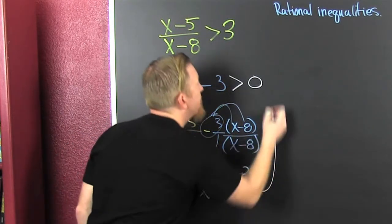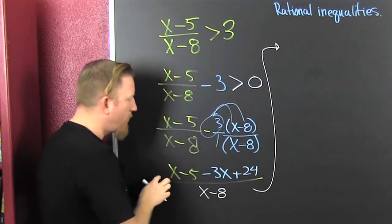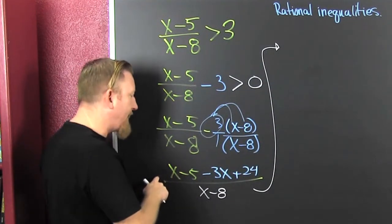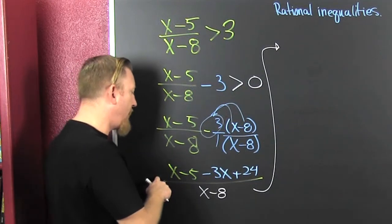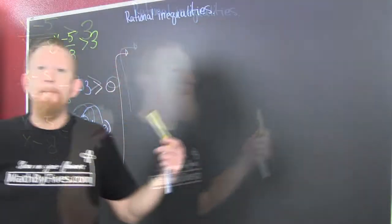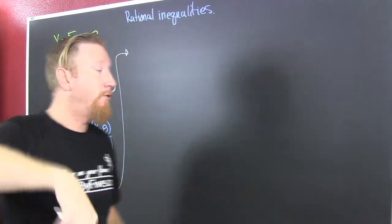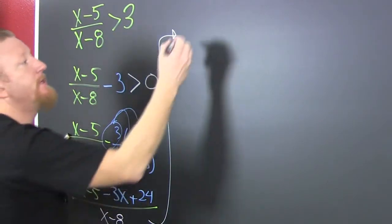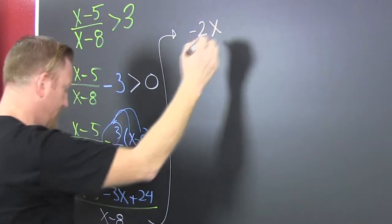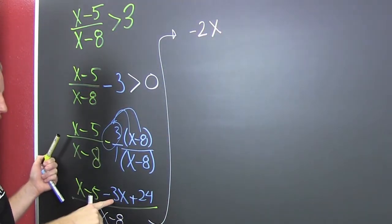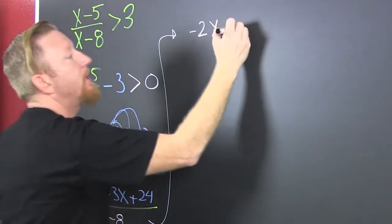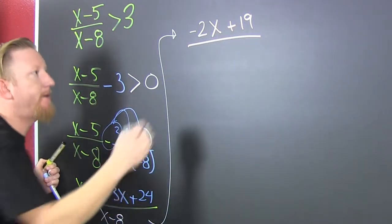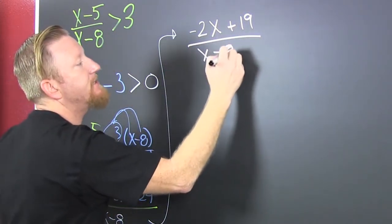Now I'm going to gather, collect, and combine like terms. I've got x's in common, so that's a minus 2x plus 19, all over x minus 8.